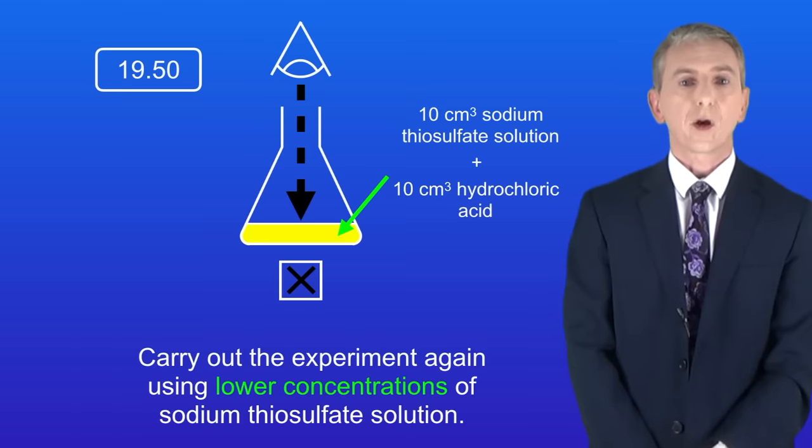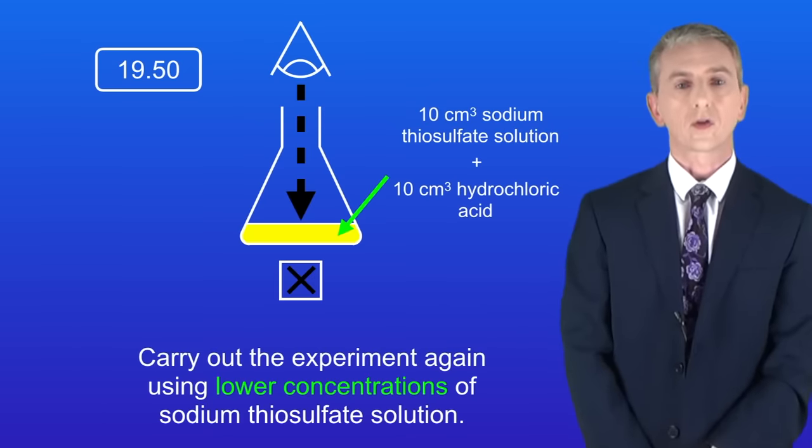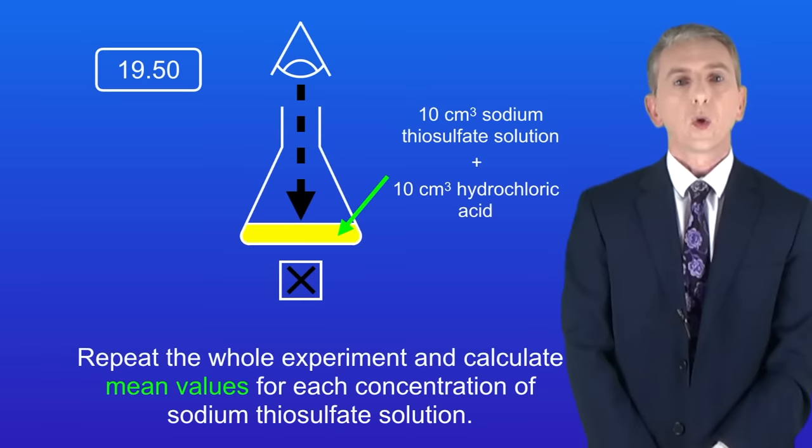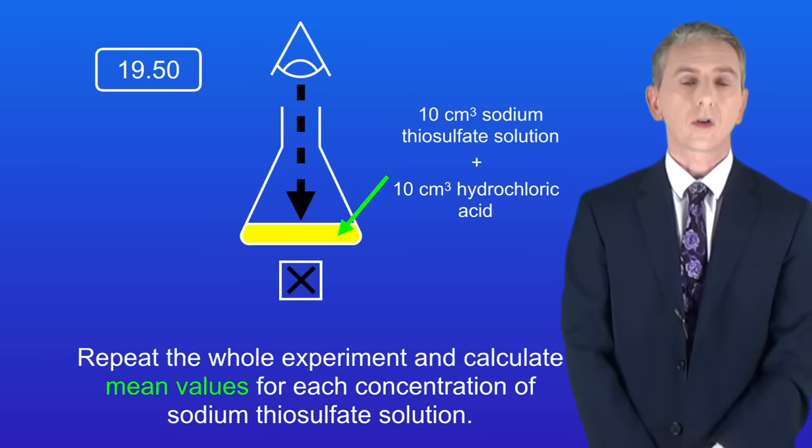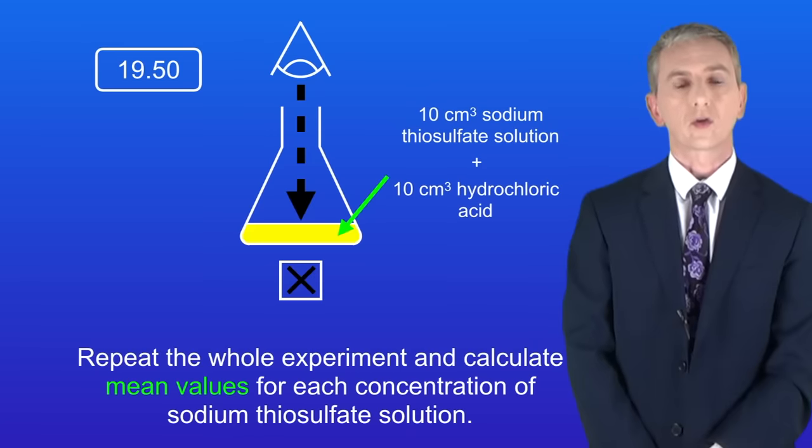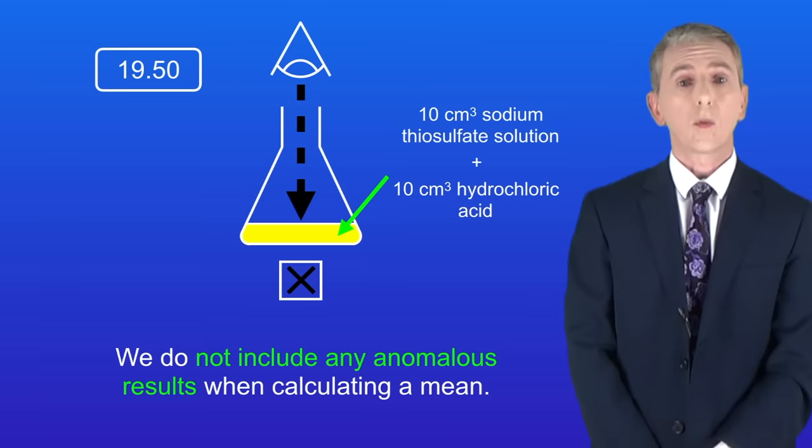We then carry out the experiment again using lower concentrations of sodium thiosulfate solution. Finally we repeat the whole experiment and calculate mean values for each concentration of sodium thiosulfate solution. Remember that we do not include any anomalous results when calculating a mean.